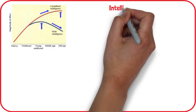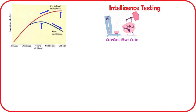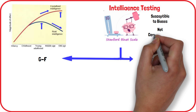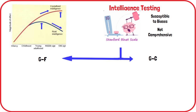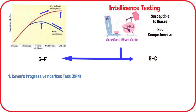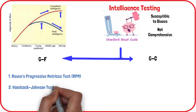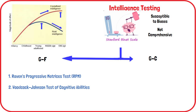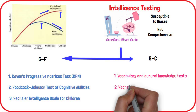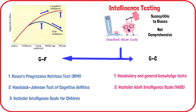Intelligence testing, including IQ tests, often measures aspects of both fluid and crystallized intelligence, though these tests can be biased and may not fully capture a person's abilities. Common tests for fluid intelligence include Raven's Progressive Matrices (RPM), a non-verbal test assessing pattern completion; the Woodcock-Johnson Test of Cognitive Abilities, which measures cognitive skills and achievement; and the Wechsler Intelligence Scale for Children, which assesses verbal reasoning and memory skills in children. Crystallized intelligence is usually measured using vocabulary and general knowledge tests, and the Wechsler Adult Intelligence Scale, which measures various cognitive abilities in adults.